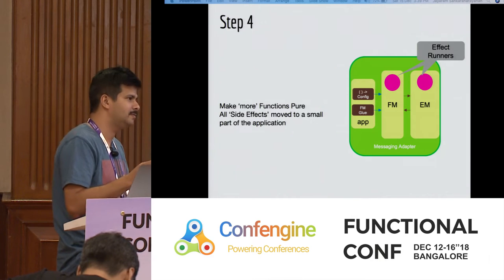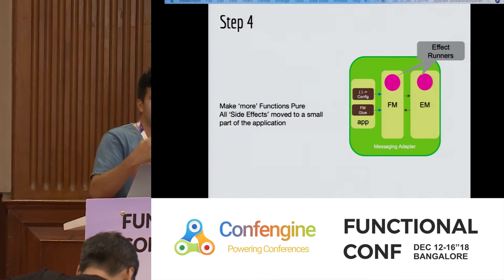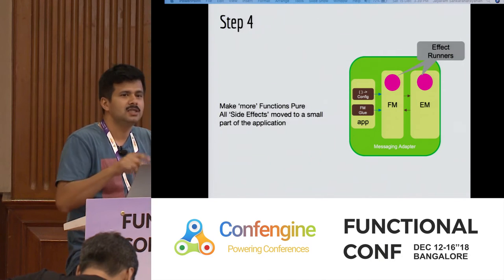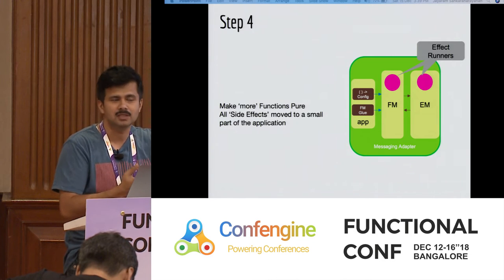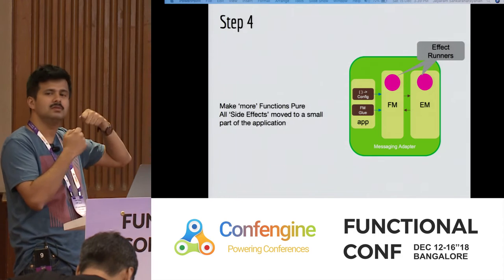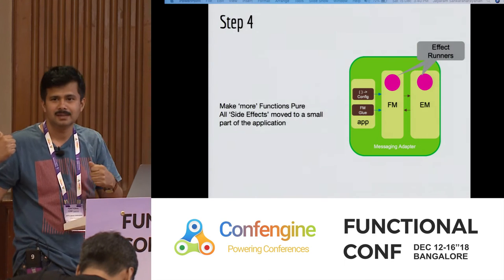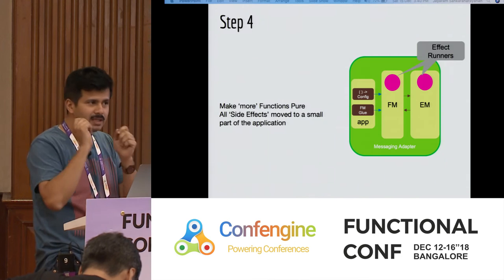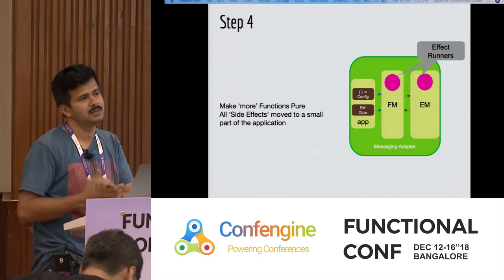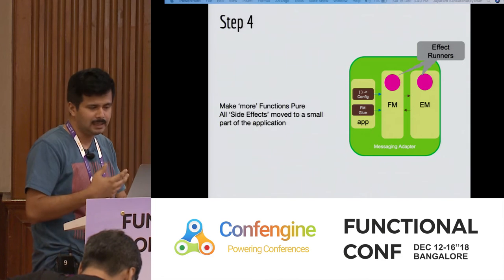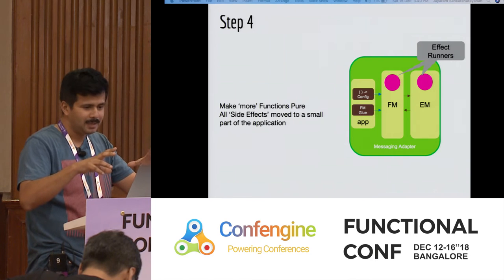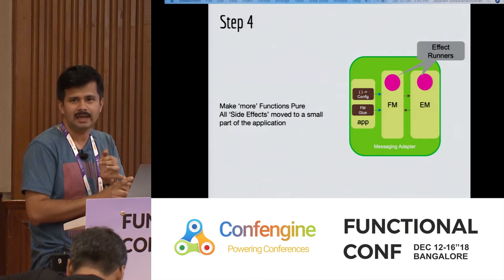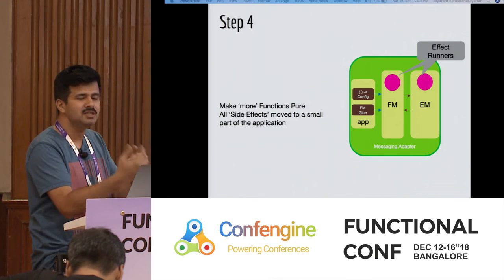So if you had a function like 'send message to user,' it was actually invoking an API with a specific payload. Now it no longer does that — it returns a structure or data which is given to the effect runner and says what needs to be done. To test that function, you don't need any mocking: for various inputs, here is the message you expect as output. Some of these changes were exploratory — figuring out how to consolidate effects, handle error scenarios, and manage response channels.